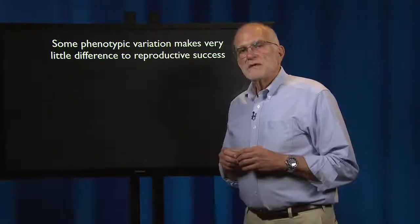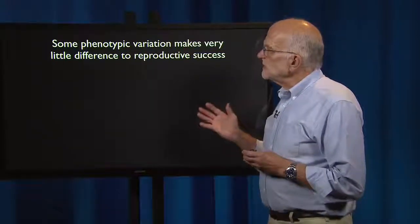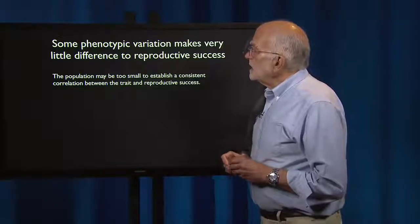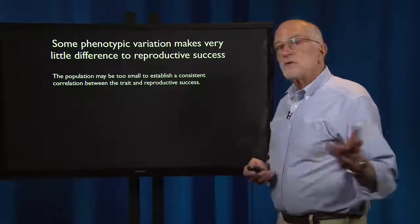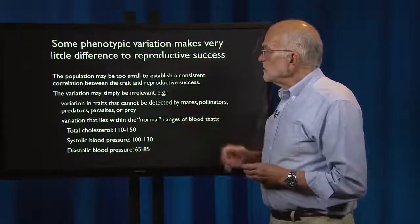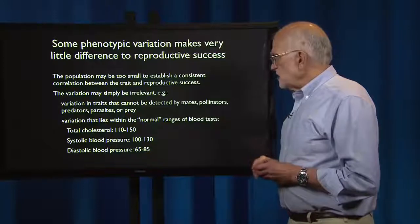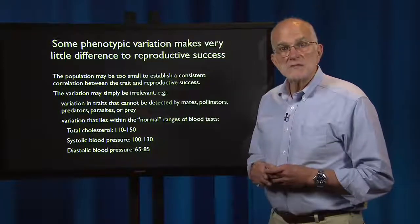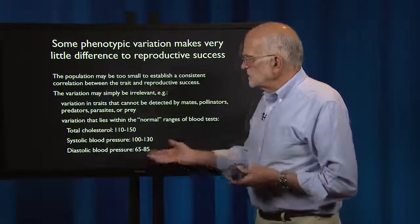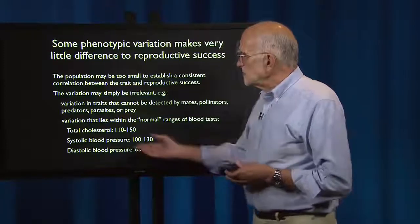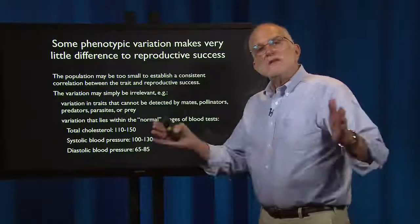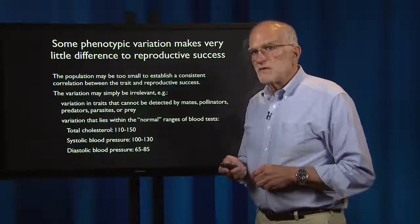Another reason for neutrality is that some phenotypic variation makes very little difference to reproductive success. The population may be too small to establish a consistent correlation between the trait and reproductive success — that is a sampling issue. Or the variation may simply be irrelevant: for example, variation in traits that can't be detected by mates, pollinators, predators, parasites, or prey. Or variation that lies within normal ranges of blood tests — for example, total cholesterol between 110 and 150, systolic blood pressure between 100 and 130, or diastolic blood pressure between 65 and 85 — is not likely to be affecting reproductive success very much.